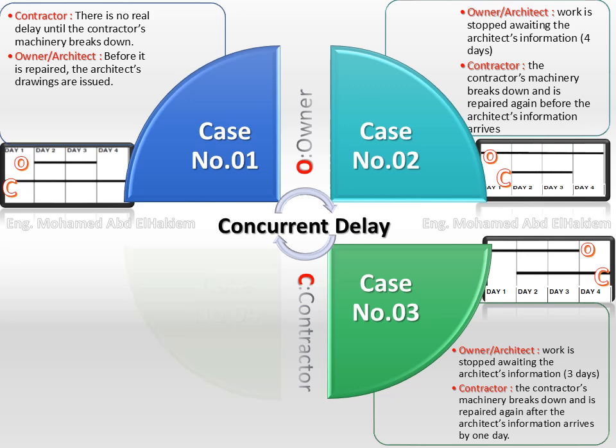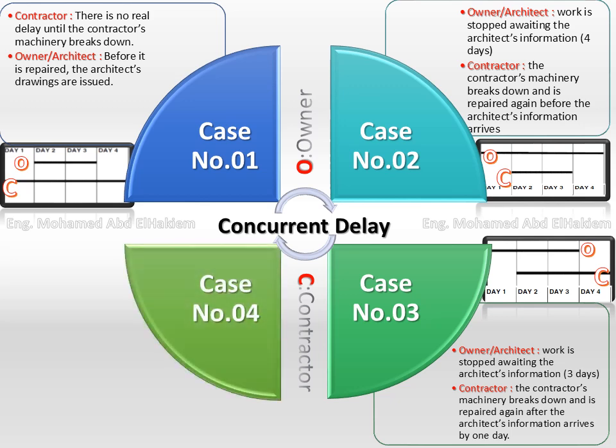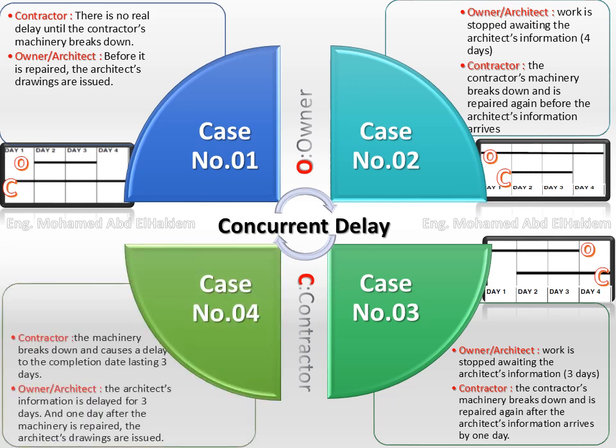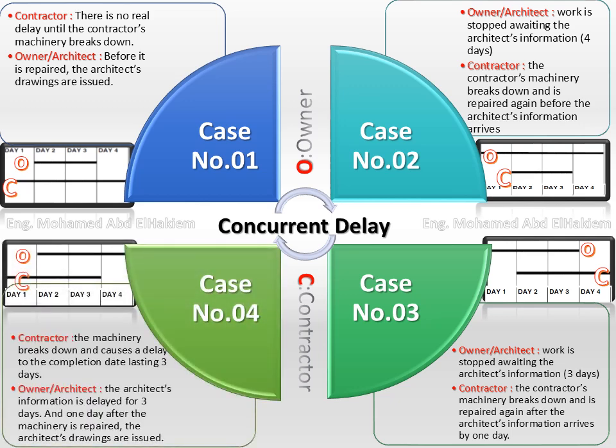Case number 4. Contractor situation: the machinery breaks down and causes a delay to the completion date lasting three days. Owner situation: the architect's information is delayed for three days, and one day after the machinery is repaired, the architect's drawings are issued.